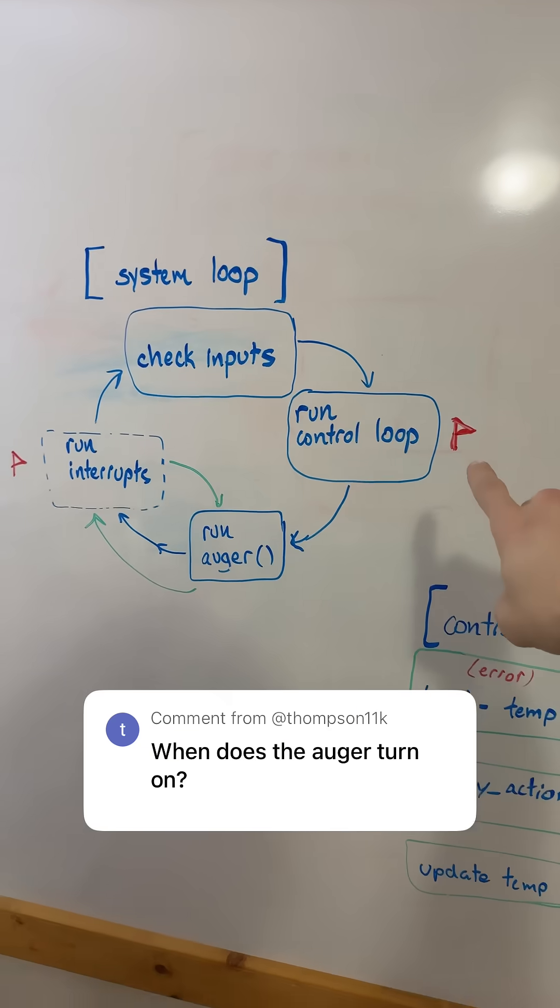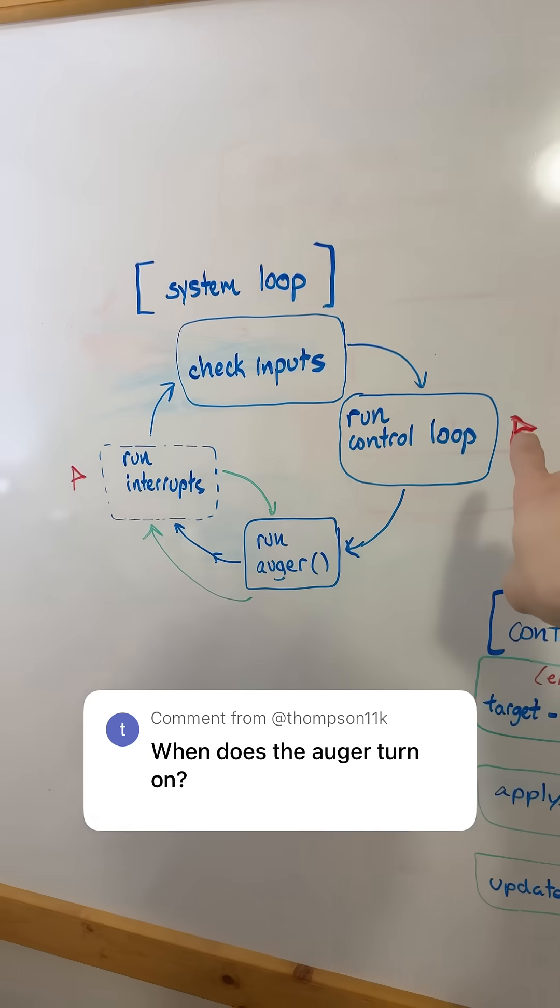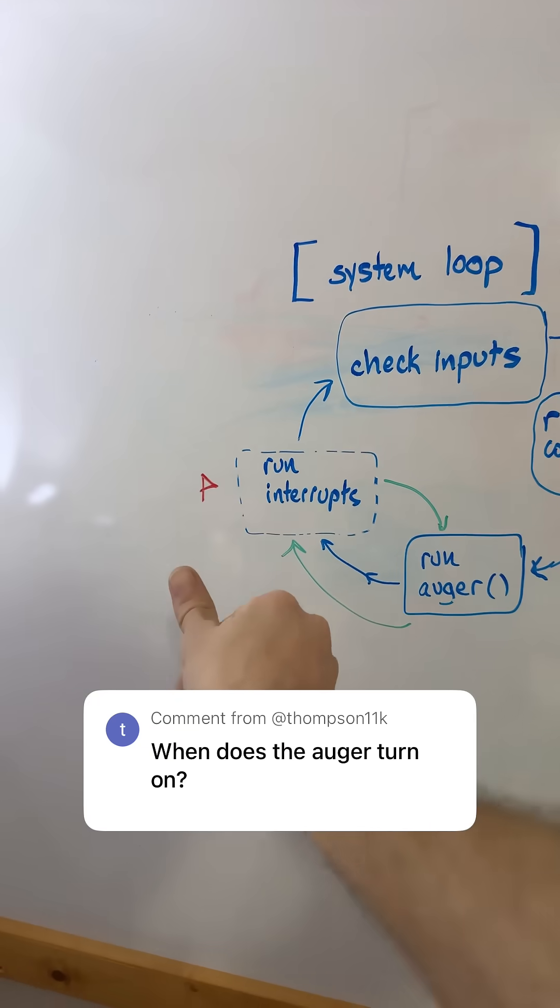The flag is a variable of one or zero. It's one here if temperature is too low and it's one here if the user is asking for a prime.